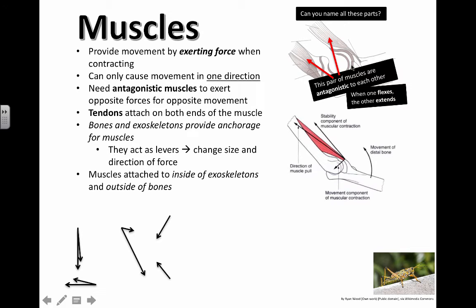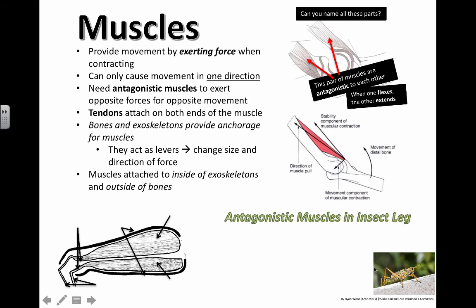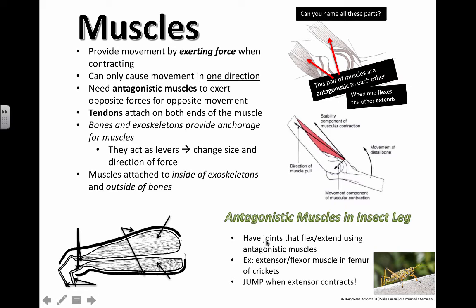So for us, our muscles are on the outside of our bones. For these guys, the muscles are attached on the inside of the exoskeleton. So here's kind of a diagram of what that might look like in a cricket's leg. They have these joints, same thing that we have, that flex or extend.